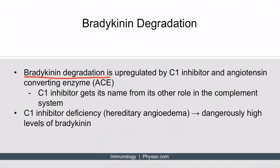Bradykinin degradation is upregulated by something called C1 inhibitor, as well as angiotensin converting enzyme, abbreviated ACE. The name C1 inhibitor may be confusing — it gets its name from its other role in the complement system, C1 referring to complement protein 1, which is not directly related to the kinin system. However, C1 inhibitor can help degrade bradykinin in addition to angiotensin converting enzyme.